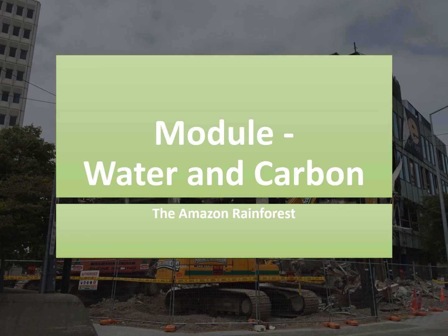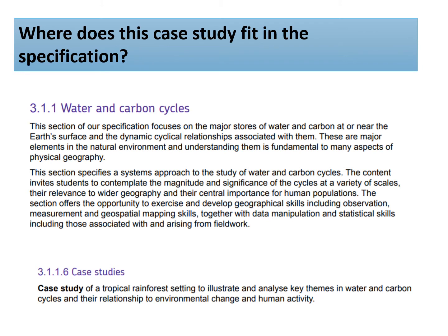The Amazon rainforest case study from the water and carbon module. This case study goes in the water and carbon part of the specification, focusing on the major stores of water and carbon around the earth. This is specification reference 3.1.1.6, a case study of a tropical rainforest setting to illustrate and analyse key themes in water and carbon cycles and their relationship to environmental change and human activity.